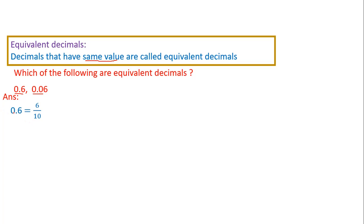The first decimal is 0.6. After converting 0.6 into a fraction we will get 6 by 10. For those who don't know how to convert decimals into fractions, you can watch my previous videos — I am providing the link in the i-button on the right side of your screen. Similarly, after converting 0.06 into a fraction we will get 6 by 100.